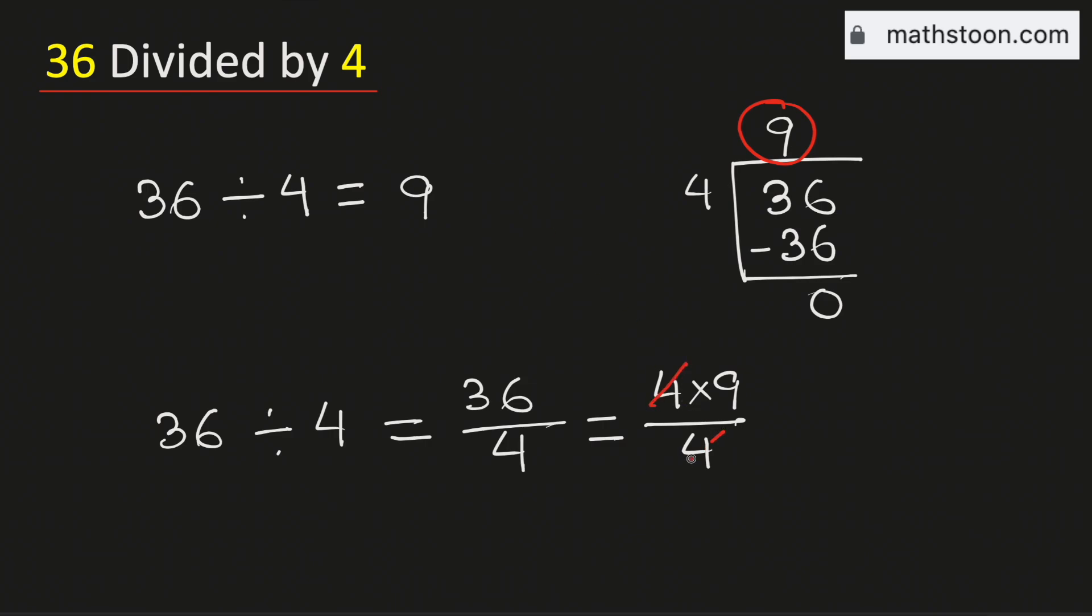We can cancel this 4, therefore it is equal to 9. So we have obtained the value of 36 divided by 4, which is 9, in two different methods. And this is our final answer.